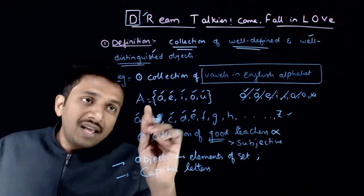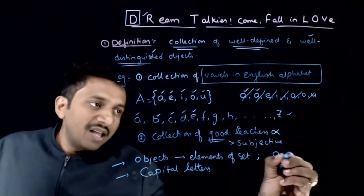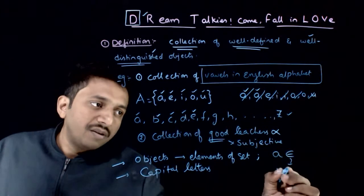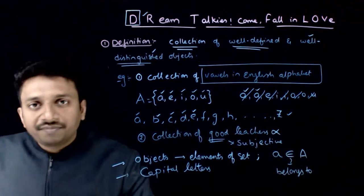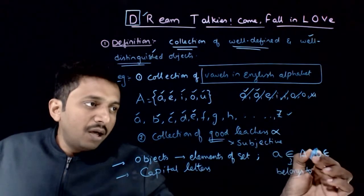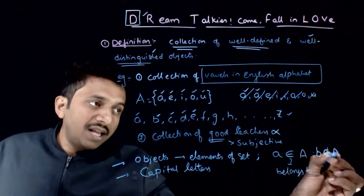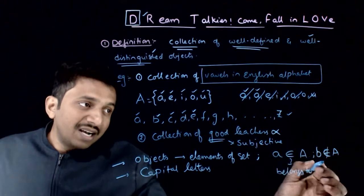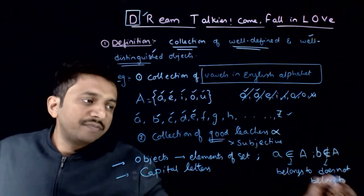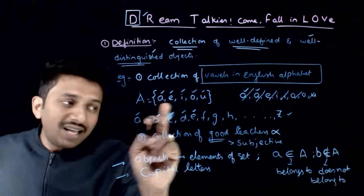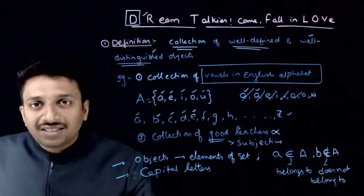Every element of the set belongs to that set. We write that element A belongs to set A using the belongs-to symbol — this is a new symbol that stands for 'belongs to.' Does element B belong to set A? No, element B does not belong to set A. If you write the belongs-to symbol and cross it out, it means 'does not belong to.' So A is an element of A and belongs to A, while B is not an element of A and does not belong to A. Each element of the set belongs to that set.